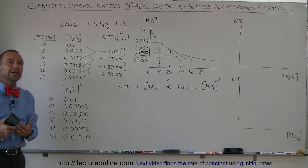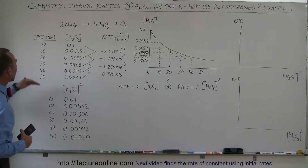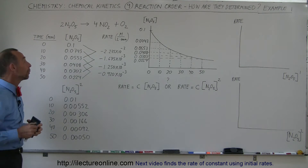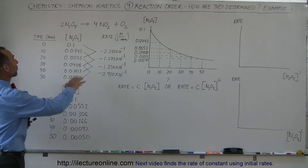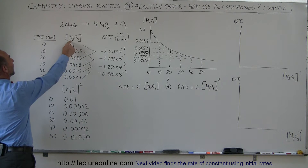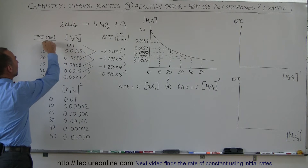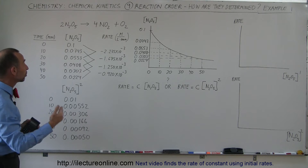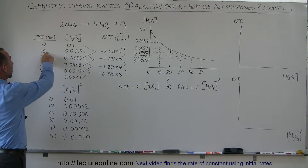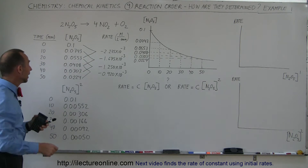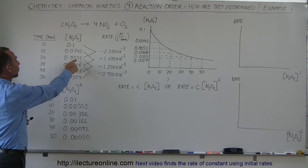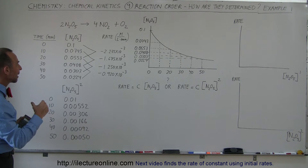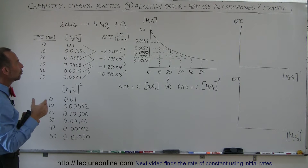What we're actually doing is measuring the concentration of the dinitrogen pentoxide in the solution at regular intervals. At the very start, the concentration is 0.1 moles per liter. After 10 minutes it's down to 0.07, after 20 minutes 0.05, after 30 minutes 0.04, and so forth. From that, we should be able to figure out the reaction rate.